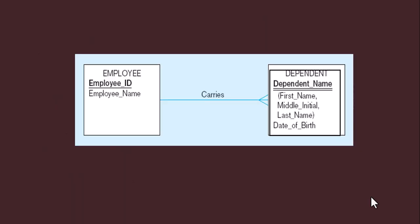This example shows employee — these are two entities. This entity is the strong entity and this is the weak entity, indicated by the double underline on this attribute.